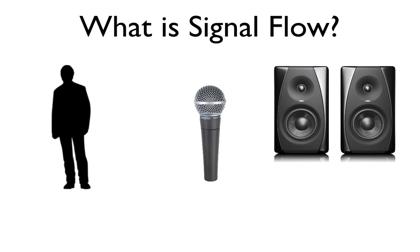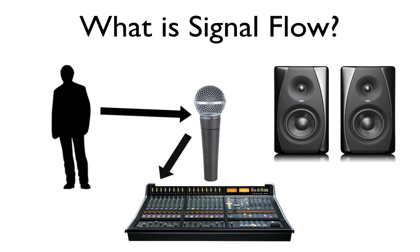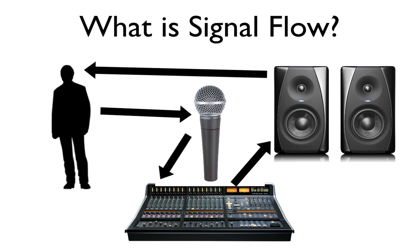So when a singer sings into the microphone, that acoustic energy goes into the microphone, it transforms into an electrical signal, it goes into that XLR cable that it's connected to, then that XLR cable connects to a mixer, and then that mixer is connected to other speaker cables that finally meet the final speakers that you could hear that sound coming out of. So that's what signal flow is — it's that chain from beginning to end.